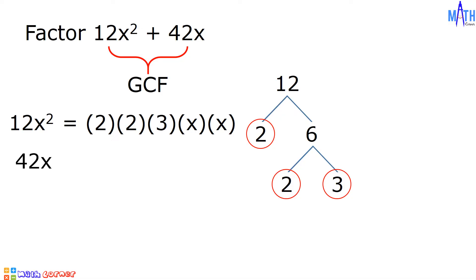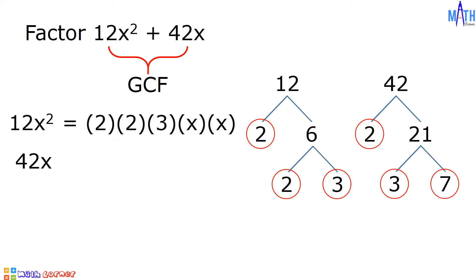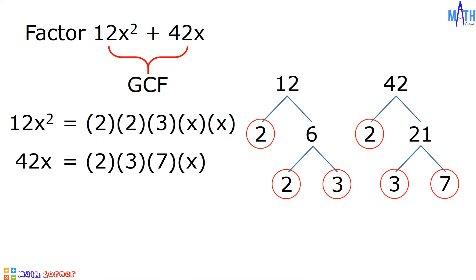Next is 42x. The numerical coefficient is 42, and it is equal to 2 times 21. And 21 is equal to 3 times 7. So 42 is equal to 2 times 3 times 7. For the variable, since the exponent is 1, we only have x here. And 42x is equal to 2 times 3 times 7 times x.